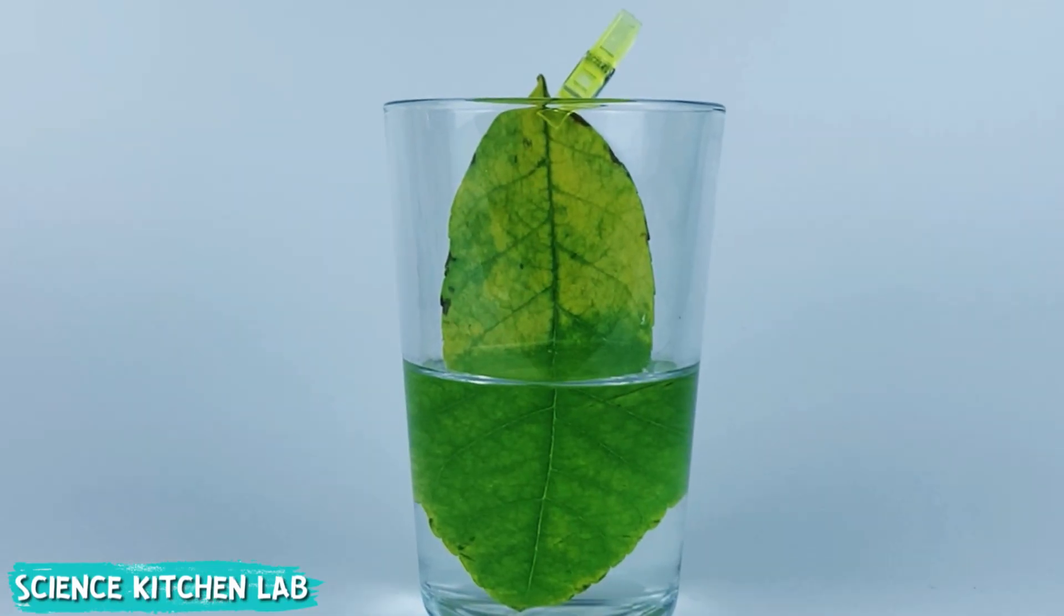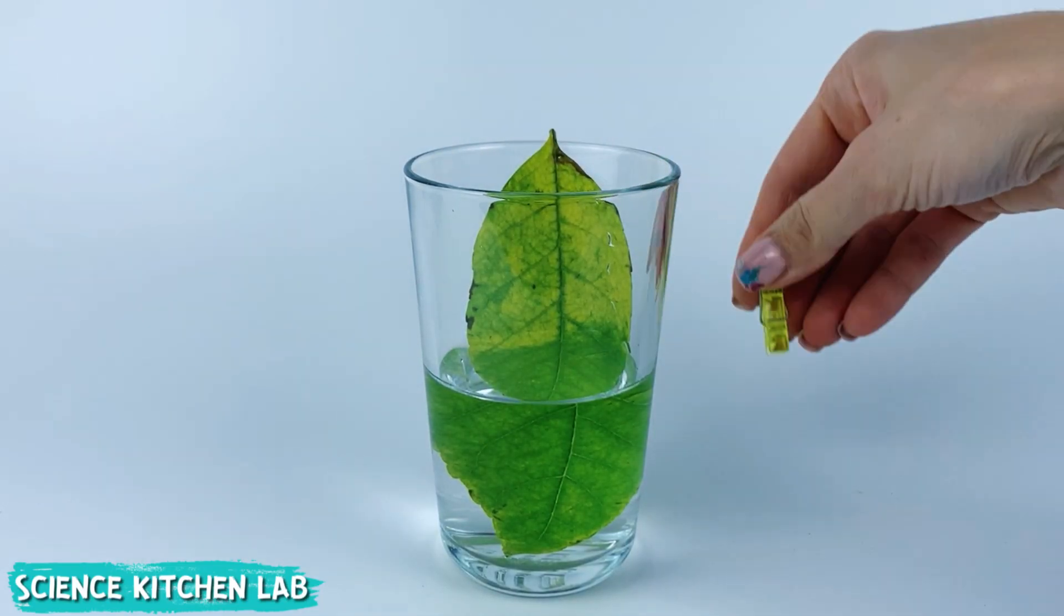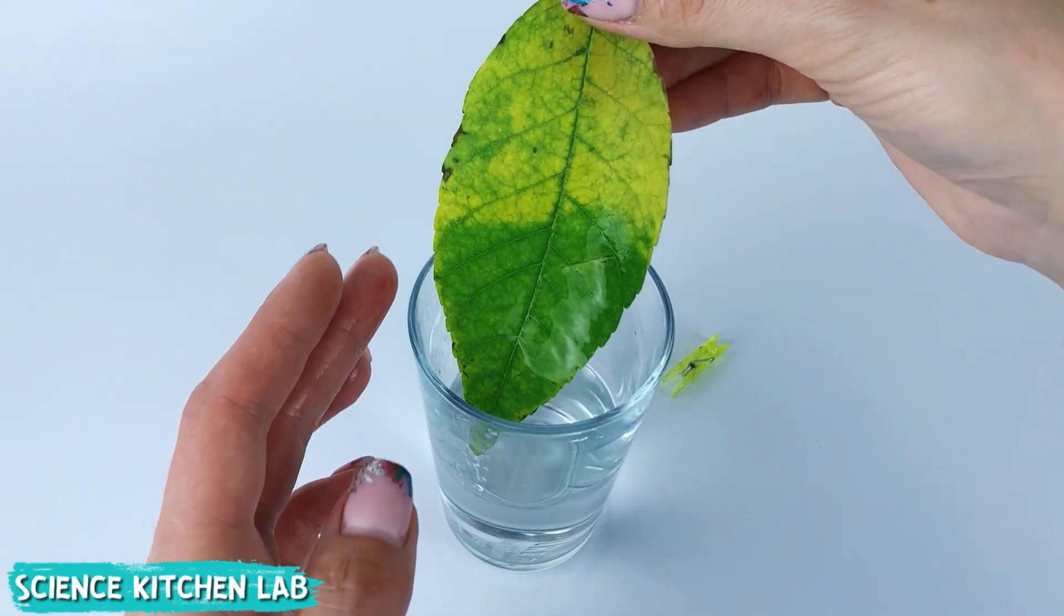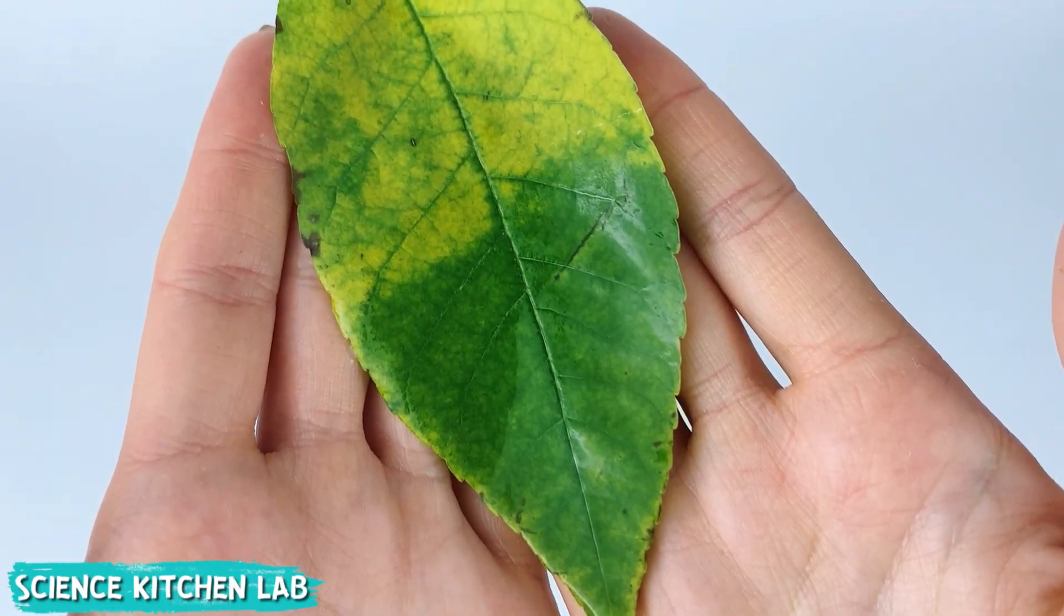Look, this looks incredible. The part that was in water remained green and the one that was in the air turned yellow. Without light, the green pigment in leaves breaks down. But why didn't the second part of the leaf turn yellow?